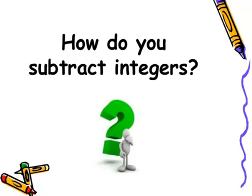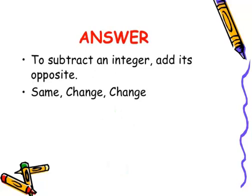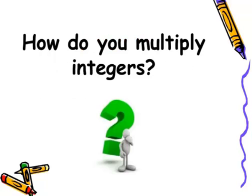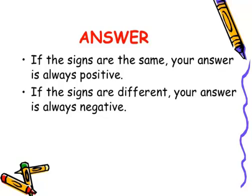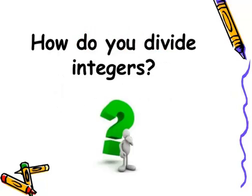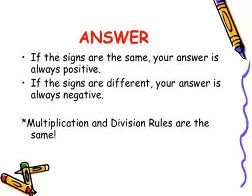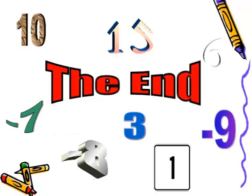How do you subtract integers? To subtract an integer, add its opposite — remember: same, change, change. How do you multiply integers? If the signs are the same, the answer is always positive; if the signs are different, the answer is always negative. How do you divide integers? Same rule: same signs give positive, different signs give negative. Multiplication and division rules are the same. This is the end of the lesson — hope you enjoyed it. Please comment, subscribe, and like for more videos.